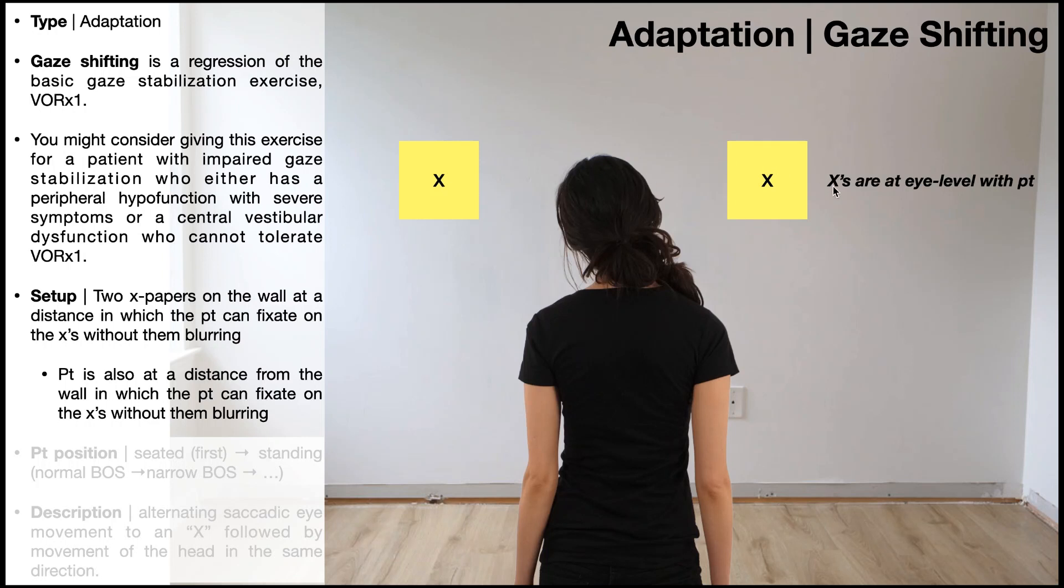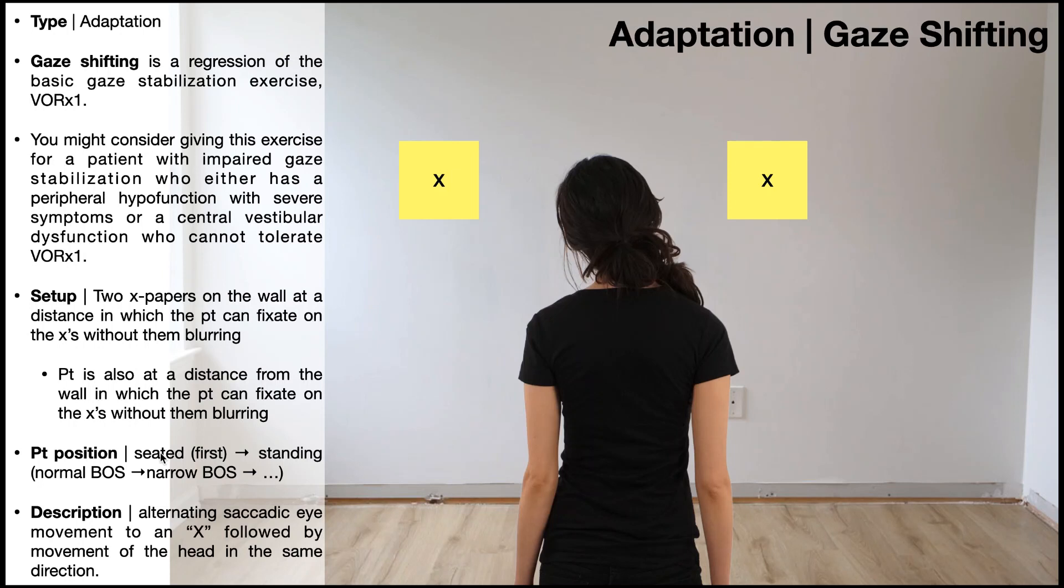The X's are at eye level with the patient. The patient will almost always start off doing this in the seated position, but you can still progress this just like you do the VOR times one. You can progress from seated to standing, and even the progressions of base of support within standing, like a normal base of support to narrow base of support, etc.